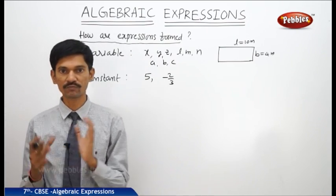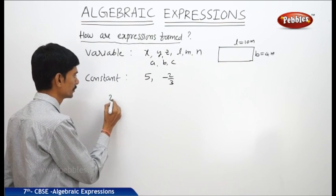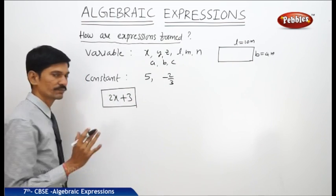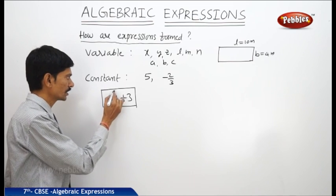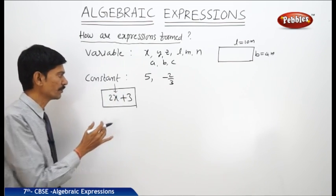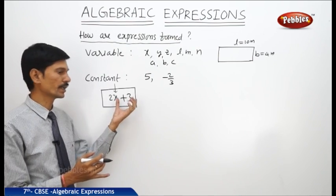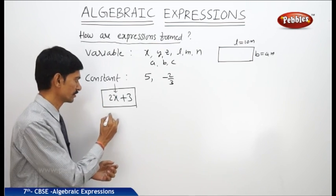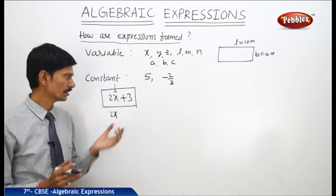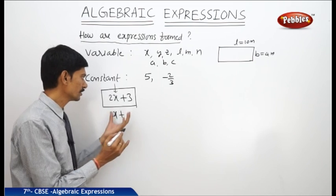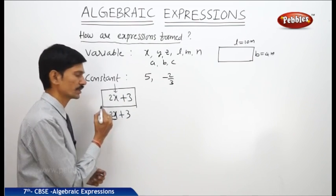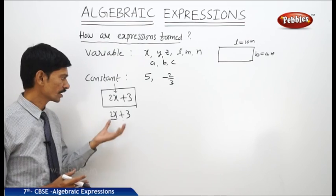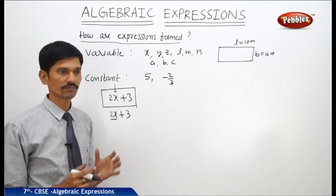Now let us see how the expressions are formed. Let us take an expression 2x plus 3. To form the expression 2x plus 3, first we have taken a variable x, then it is multiplied by 2, then the constant 3 is added to the product. So by multiplying the variable x by 2, we got the product 2x. We have used one operation — addition — and then the constant term 3 is added to the product 2x. To combine two or more expressions, we use the operations such as addition, subtraction, multiplication and division.